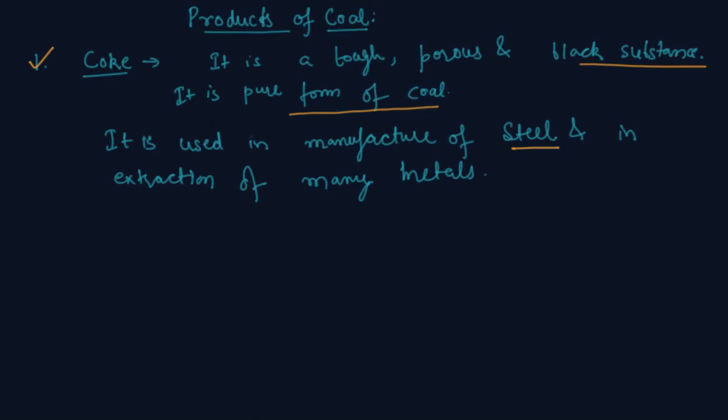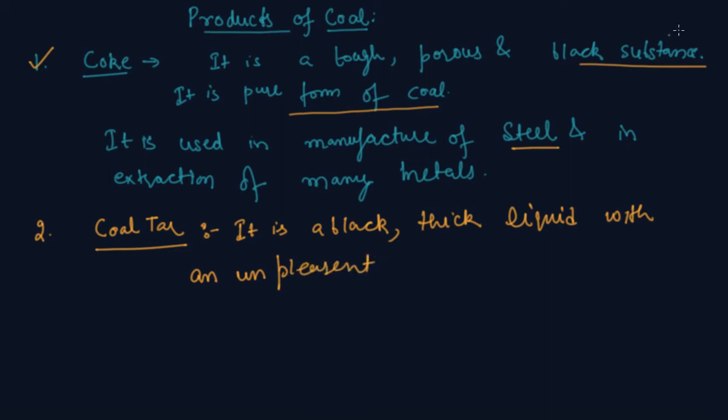Now let's come to second substance which is coal tar. It is also black, it is a black, but it is in liquid form, thick liquid with an unpleasant smell. So it is a black, thick liquid with an unpleasant smell. It is a mixture of about 200 substances.